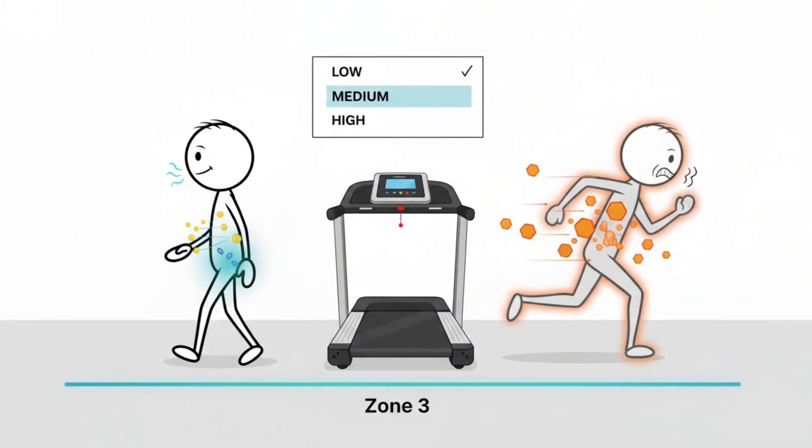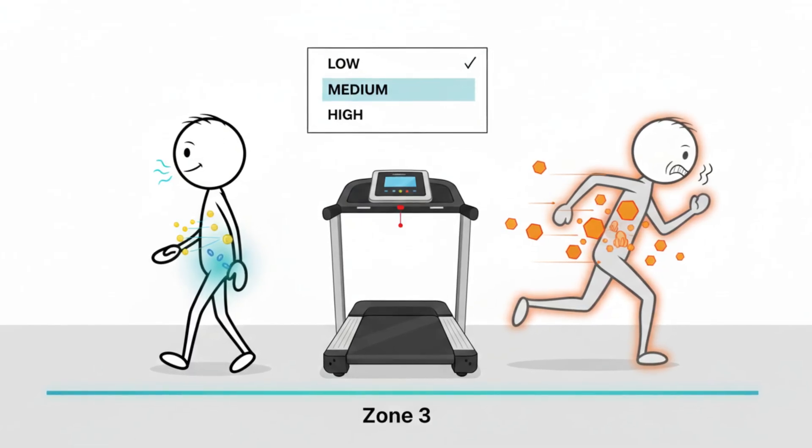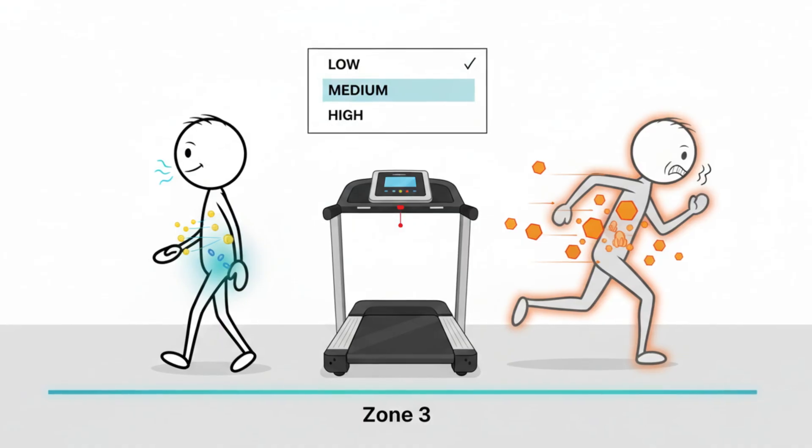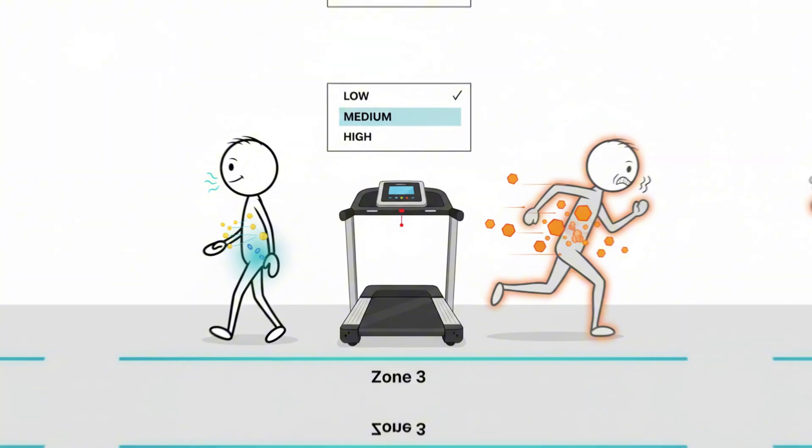When breathing becomes choppy, you've likely drifted into Zone 3, which prioritizes glucose rather than fat. Staying just below that shift is where your body burns the most visceral fat.